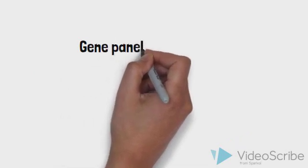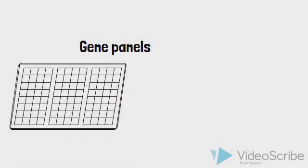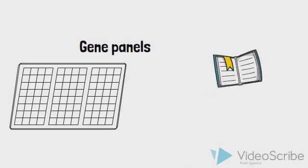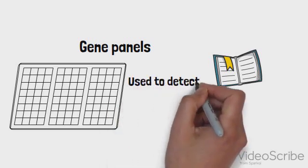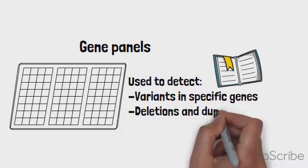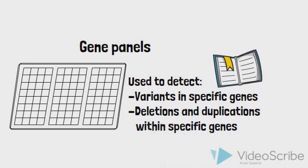Gene panels are another type of test that can be extremely useful if a presentation is known to be associated with disease-causing variants in different genes. Using our library analogy, instead of looking at the entire genome or reading an entire bookshelf full of books, which can be very expensive and time-consuming, clinicians can tailor their assessments to only certain pages of different books to detect specific spelling changes in genes of interest. Gene panels allow clinicians to examine hundreds of genes at a time. They can be ordered as predetermined or off-the-shelf sets designed by companies and laboratories, or can be customized according to a clinician's clinical suspicions.